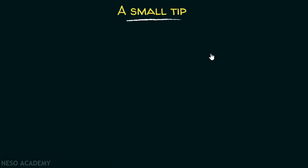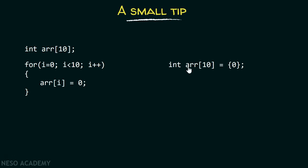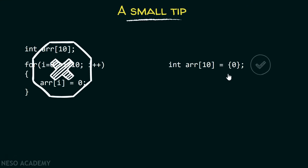Here is a small tip. Instead of writing value zero one by one from index zero to nine, you can simply write a single zero inside the flower brackets. Both are exactly the same — since entering fewer elements than the length specified causes the rest to be filled by zero automatically, specifying just one zero means the rest will automatically be filled by zero as well. This is the advantage of this approach, and it is the preferred method.